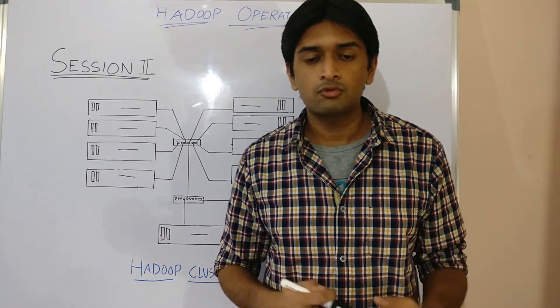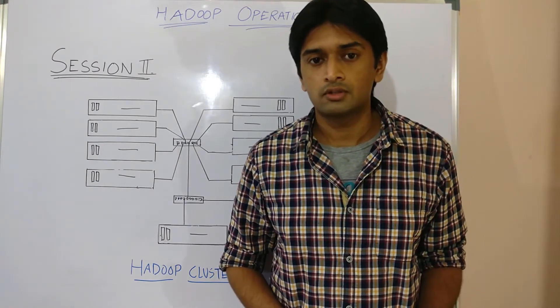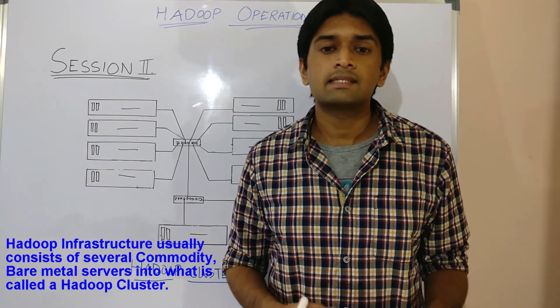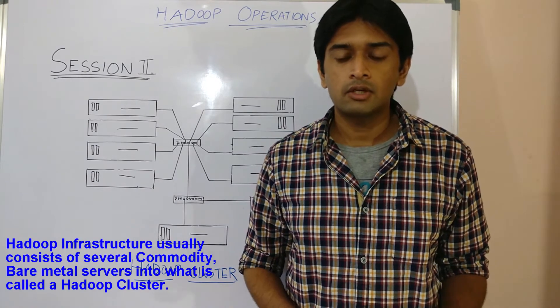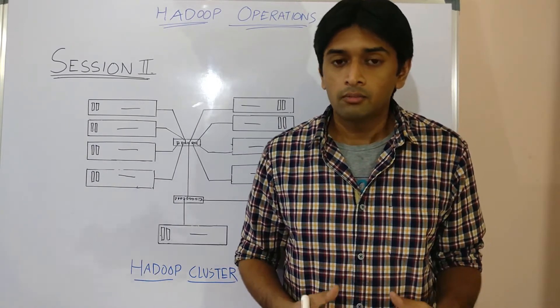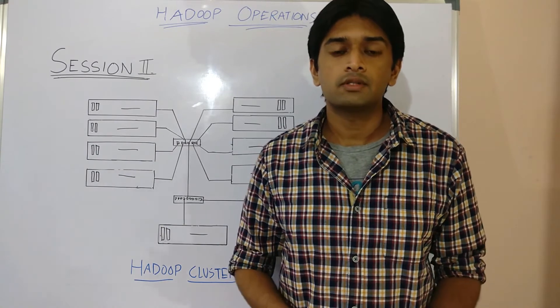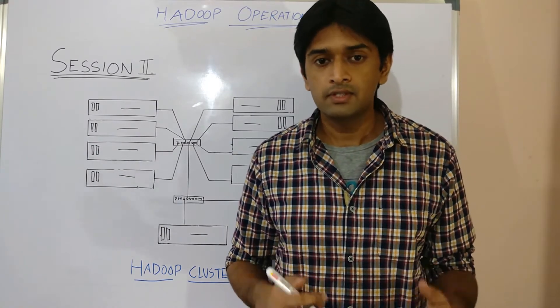Here we can see a basic visualization of the Hadoop infrastructure. It usually contains several commodity bare metal servers into what is called a Hadoop cluster. By commodity I mean medium to low end servers and by bare metal I mean physical servers.